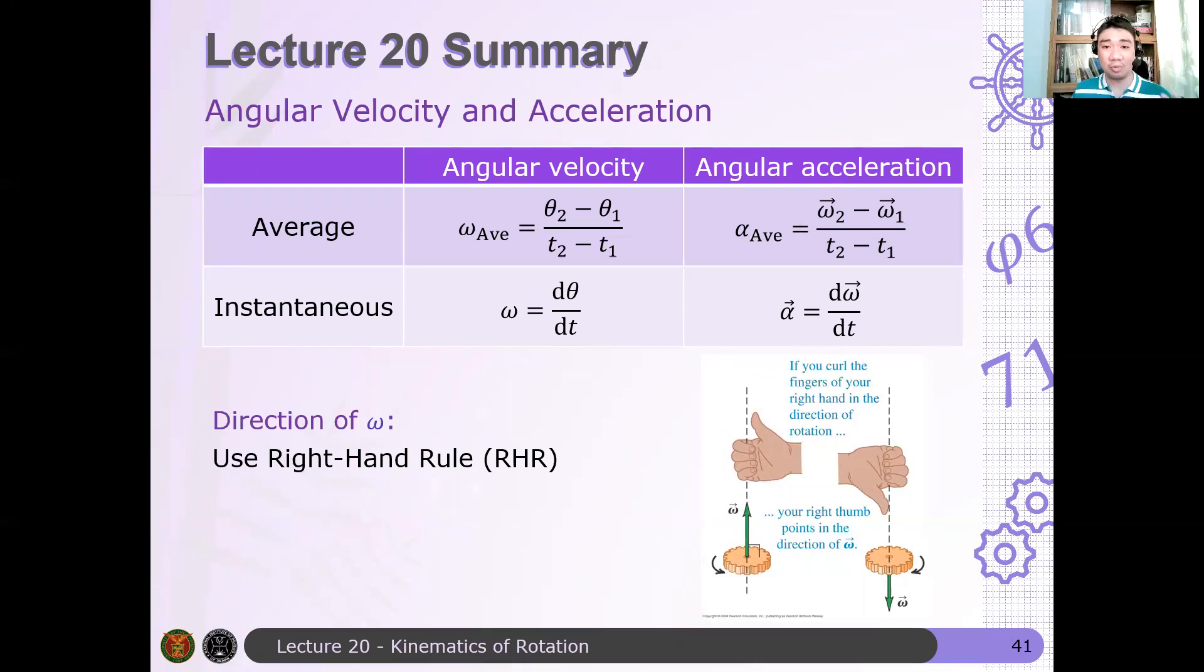And then the instantaneous quantities are just time derivatives of the angular position and the angular velocity, respectively. Now to determine the direction of the angular velocity, you just use your right-hand rule for planar motions.